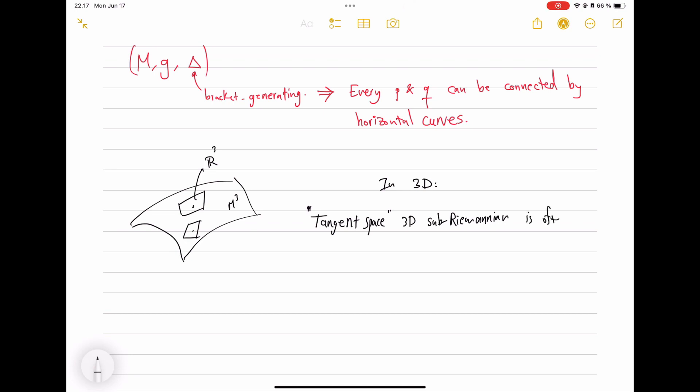So it turns out that for three-dimensional sub-Riemannian manifolds, the tangent space is, at most points, the Heisenberg group. So that makes Heisenberg group very special. I mean, H1, that it serves as the generic, like 3D object, 3D sub-Riemannian object. Tangents at every point are H1. So H1 is kind of the Euclidean space of sub-Riemannian world. That's why H1 is so special. In higher dimensions, the tangents could be more general groups.